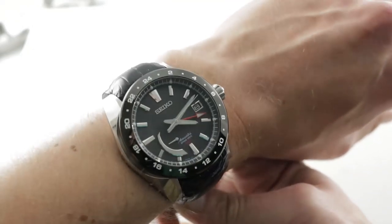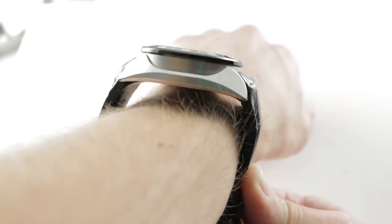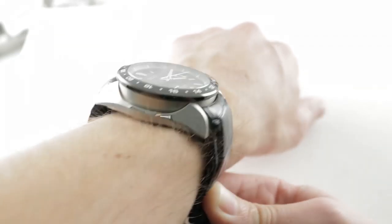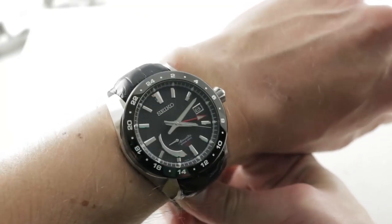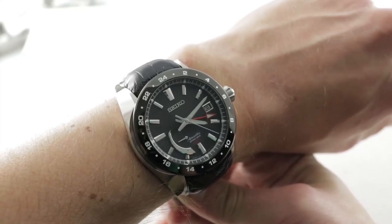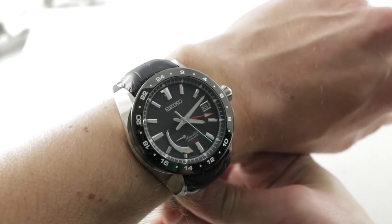The timepiece sits large on my wrist but there is an ergonomic equation that starts with the stumpiness of the lugs and ends with the curvature of the case. So don't be frustrated by the size. This is a 46 that I believe would wear well on a wrist as small as 14.5cm circumference.